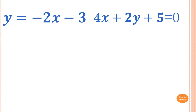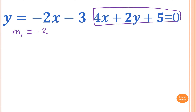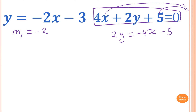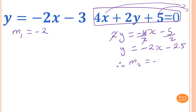For this next pair of equations, one is already in gradient-intercept form, so the gradient of that line is negative two. To find the gradient of the other line, which is in general form, we need to rearrange it into y = mx + b. Moving the 4x to one side and the 5 to the other, we get 2y = -4x - 5. Dividing everything by two gives y = -2x - 2.5. Therefore the gradient of the second line is also negative two, so m1 = m2 = -2 and they are parallel.